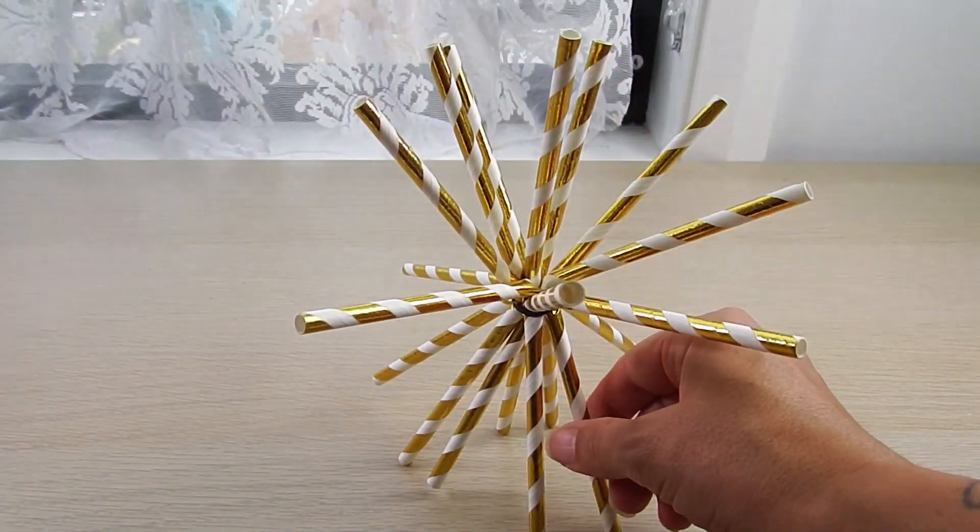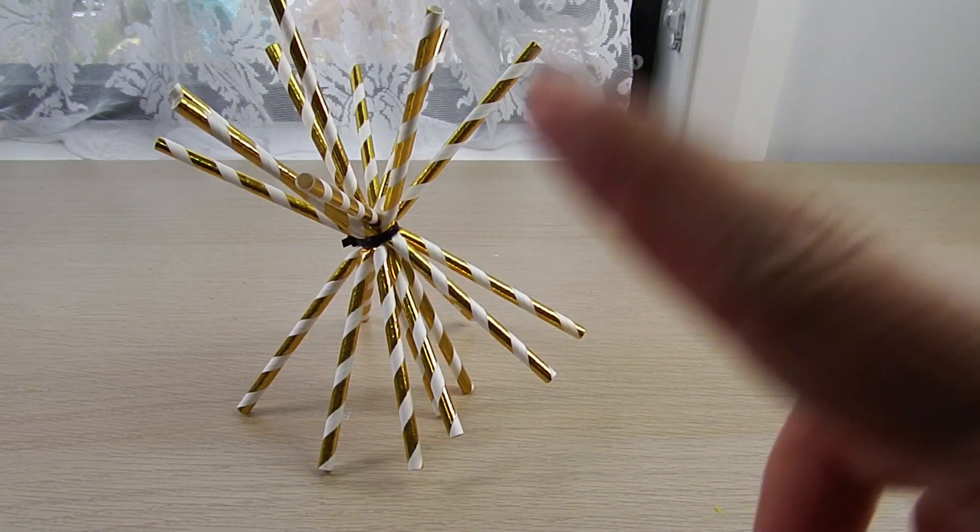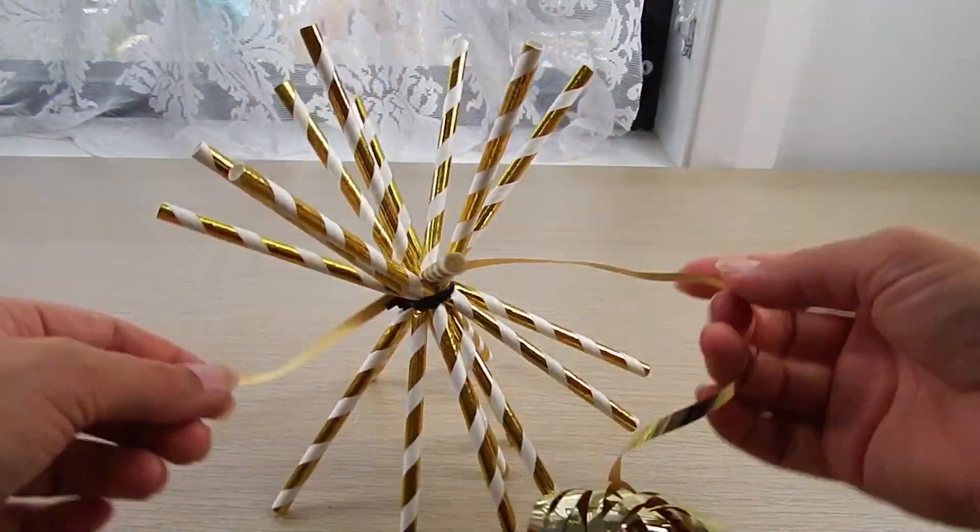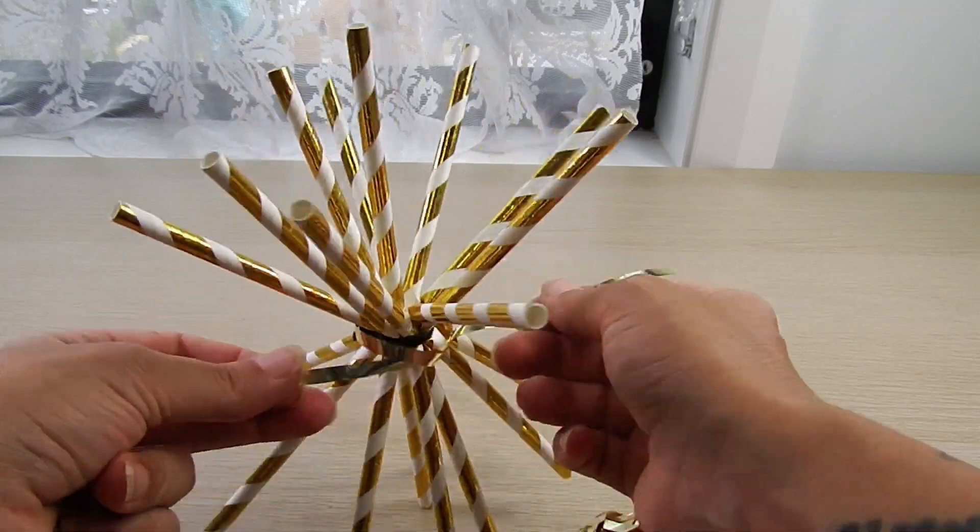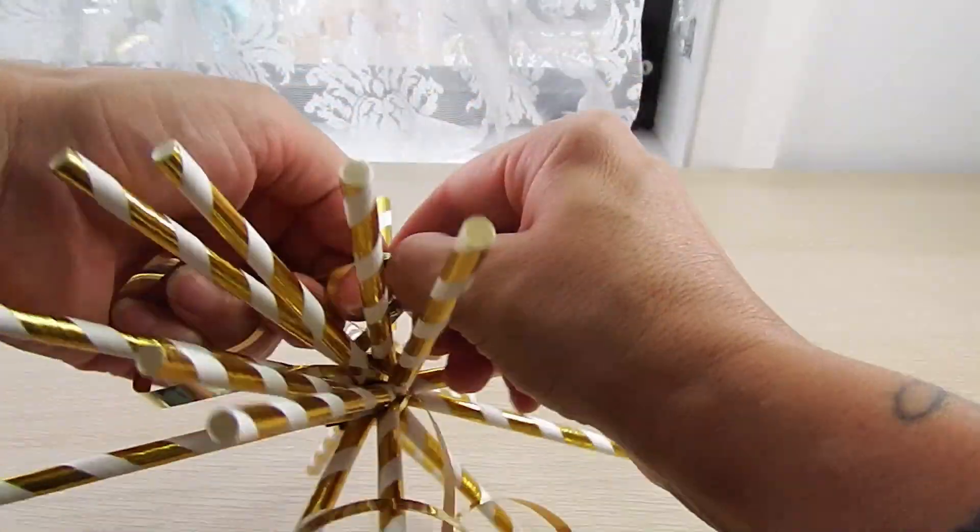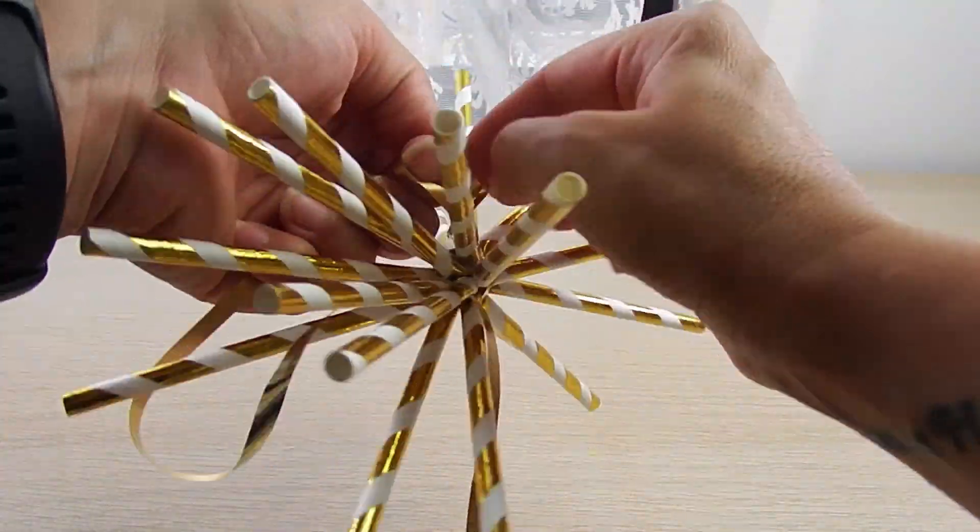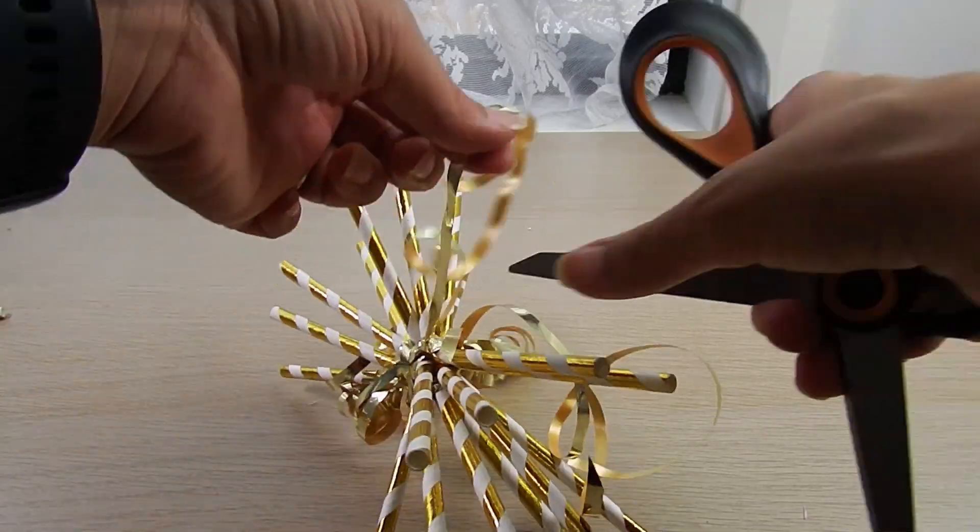So this is kind of a star shape. I decided because you could see the black string which I didn't like, I put this golden ribbon for wrapping gifts all around to match the Christmas theme.